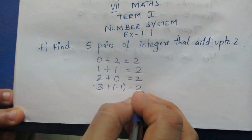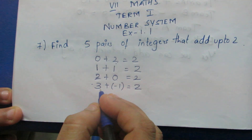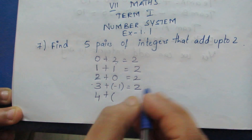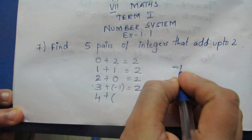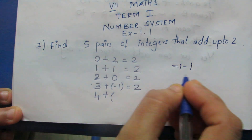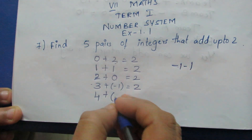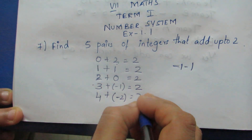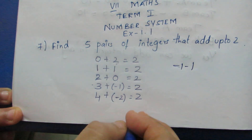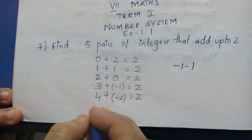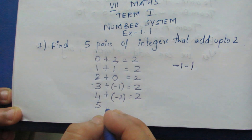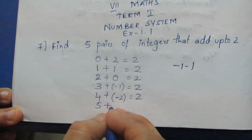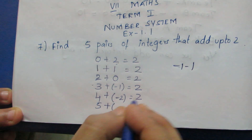Now, this is the answer. This is the answer. You are equal to 2. You have to write that number. You do this. This is the answer.